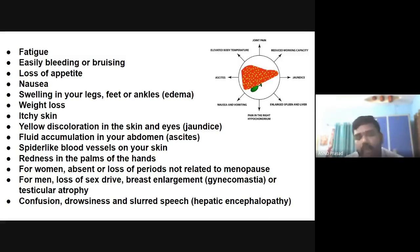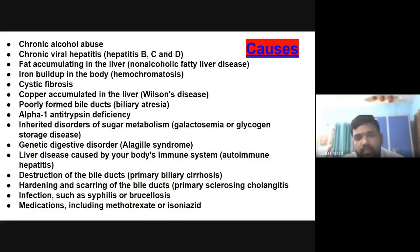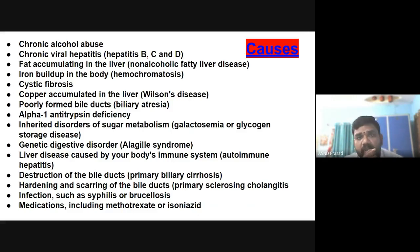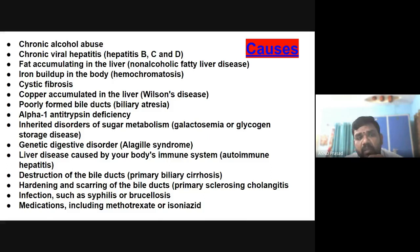What are the causes of liver cirrhosis? The first cause is chronic alcohol abuse — continuous alcohol consumption leads to liver damage. Another cause is viral hepatitis — hepatitis B, C, and D can damage the liver. Fatty liver disease, where fat accumulation in the liver can also cause cirrhosis. Iron build-up in the body, and cystic fibrosis — a different disorder that can affect the liver — are also causes.